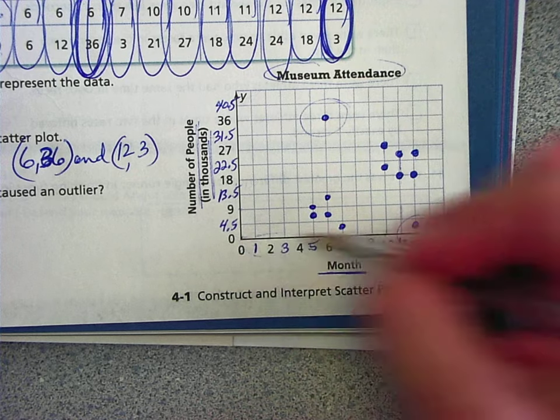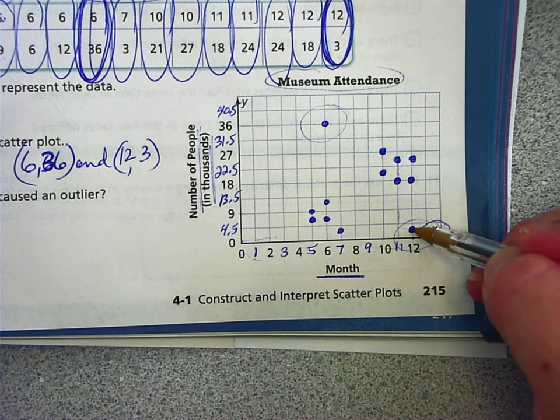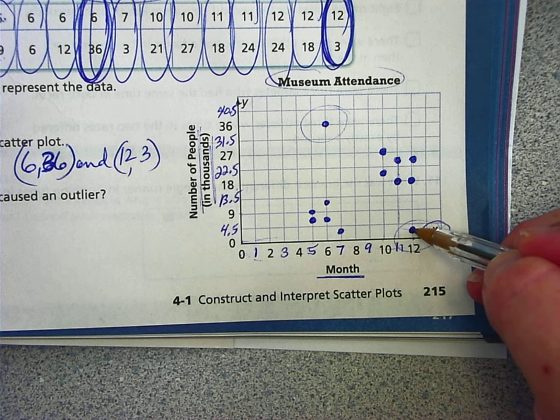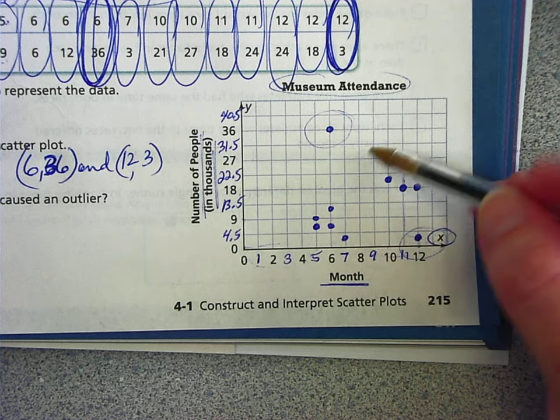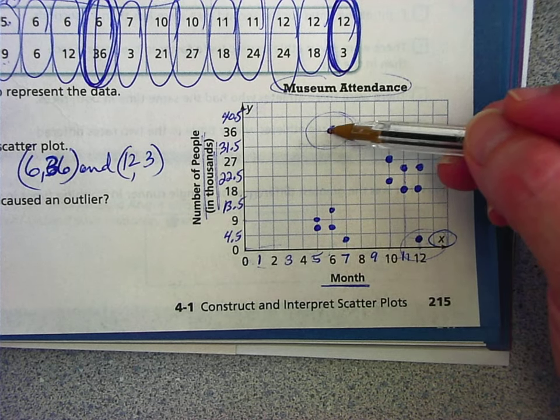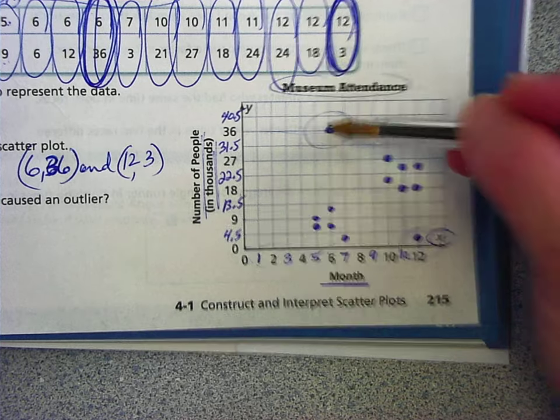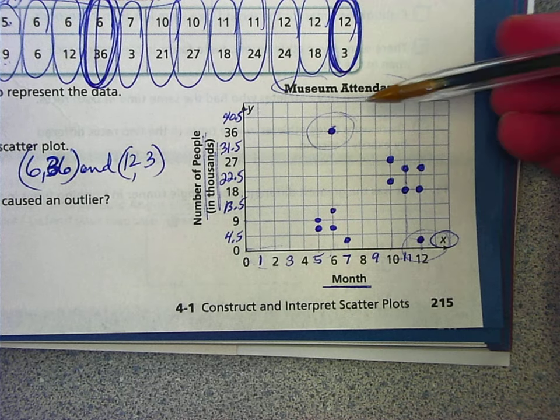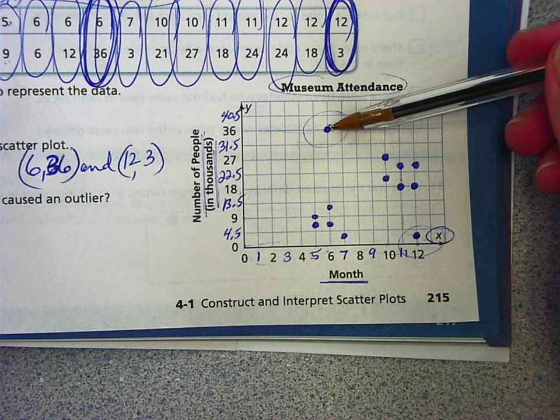Okay. Now, this says what situation might have caused an outlier. Well, this is month 12. That's December. And only about 3,000 people came to the museum. That could be that since it's December, there's holiday in December. Maybe people are too busy or don't have the money to go to a museum. This would be month 6. That's June and a whopping 36,000 people visited. So that's June, the beginning of summer. Maybe kids and families are out of school and they have a lot of time to travel.